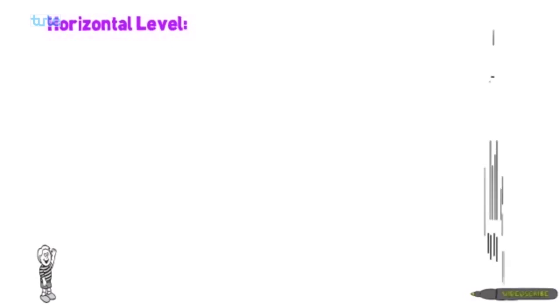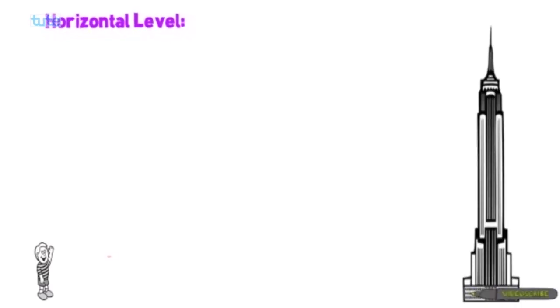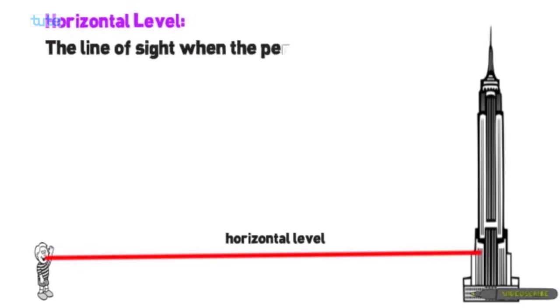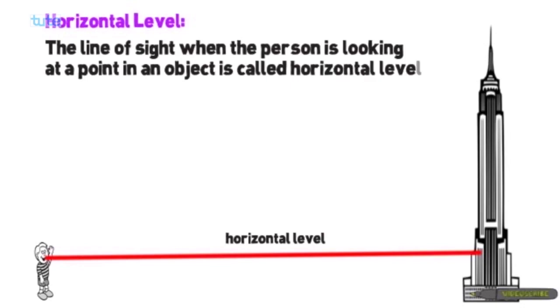Let's see what do you mean by horizontal level. A boy is standing on a ground at a certain distance from a tower. That boy is watching exactly straight to a certain point on the tower — that imaginary line is called horizontal level.